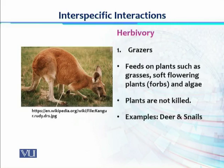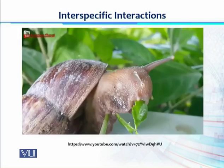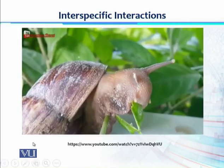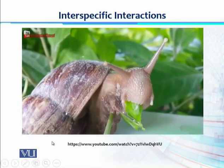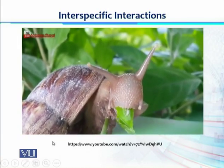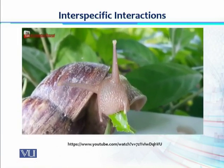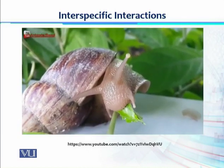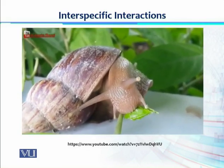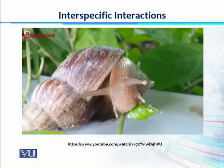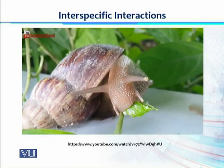Deer and snails are examples of grazers. In this video, we see how a small snail feeds on plant material. Snails have a radula, which is their tongue — a saw-like structure with which they cut leaves and swallow them by cutting into small pieces. So a snail is an example of a small invertebrate grazer, while deer is an example of a large vertebrate grazer.